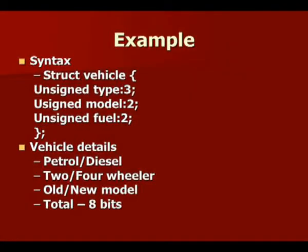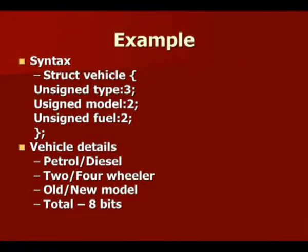Here, no data type is mentioned at all — it is simply unsigned, unsigned, unsigned — only the number of bits is specified. This is because you mention a data type only for memory allocation purposes: if the compiler sees integer it allocates 2 bytes, if it sees character it allocates 1 byte. When you yourself specify the number of bits required for storage, the necessity to mention the data type is eliminated. That is why data type is not mentioned, and this is how we declare bitfields in C.